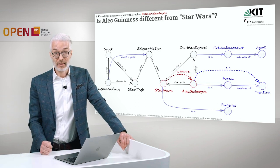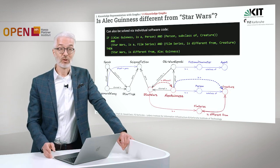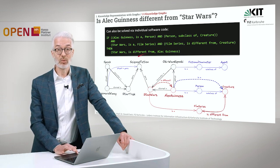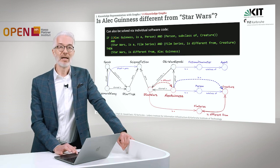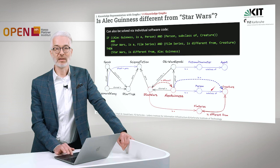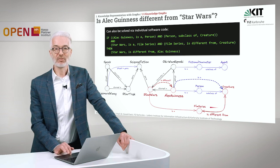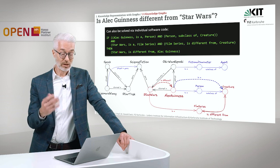Another thing: can we guess or deduce that Alec Guinness is different from Star Wars? Of course we can, in exactly the same way. We can find out about that dashed line — whether Star Wars is different from Alec Guinness. If Alec Guinness is a person, and person is a subclass of creature, and Star Wars is a film series, and a film series is different from creature — so creature is different from film series — then we can deduce that Star Wars is also different from Alec Guinness. Again, individual solution, individual software code.